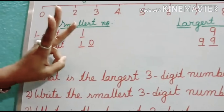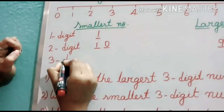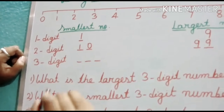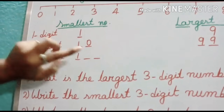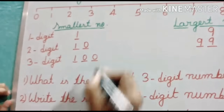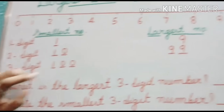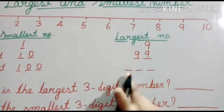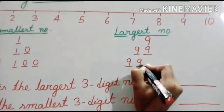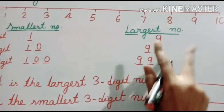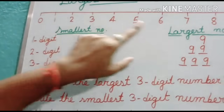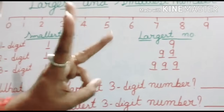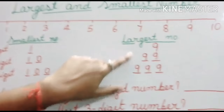For 3-digit numbers: smallest 3-digit number — we put 1 in the first place and 0 in the next two places, so the smallest 3-digit number is 100. Largest 3-digit number: largest digit is 9, so we write 9 three times — that gives 999. Let's repeat: 1-digit smallest is 1, largest is 9. 2-digit smallest is 10, largest is 99. 3-digit smallest is 100, largest is 999.